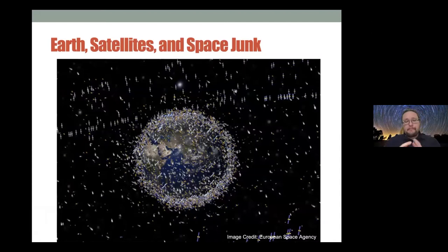This is an artistic image by the European Space Agency showing Earth with all the satellites around it. There's a lot of satellites out there. There's over 6,000 satellites in orbit. More are launched every day, definitely every week.